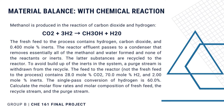Methanol is produced in the reaction of carbon dioxide and hydrogen. The fresh feed to the process contains hydrogen, carbon dioxide, and 0.4% mole inerts. The reactor effluent passes to a condenser that removes essentially all of the methanol and water formed, and none of the reactants or inerts.